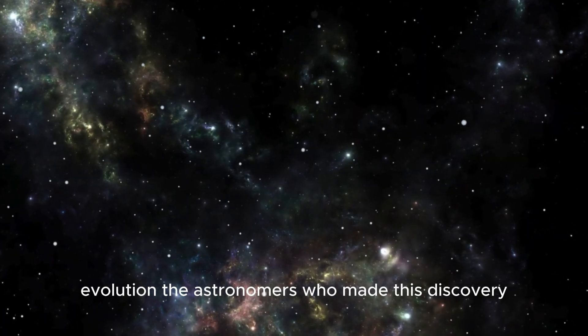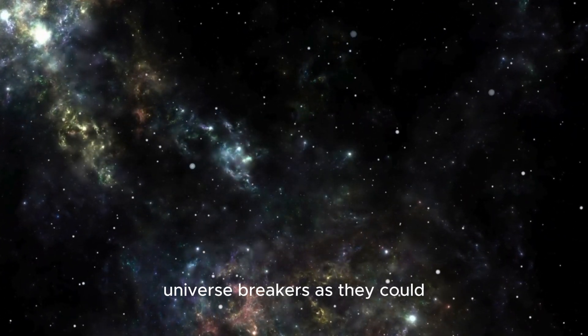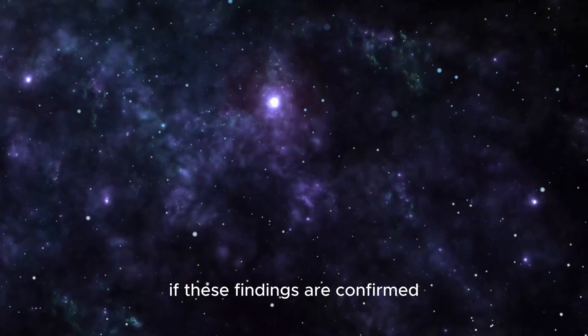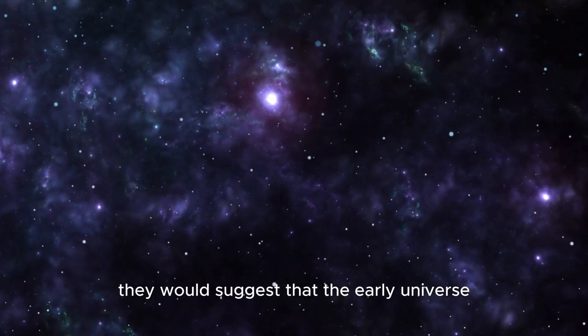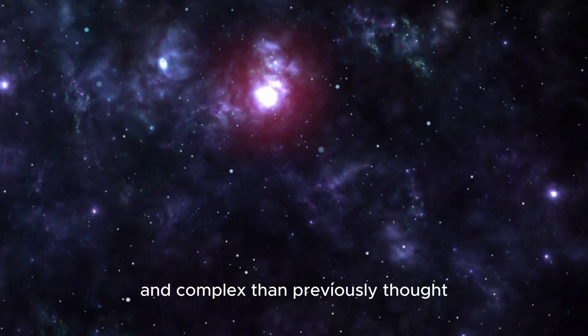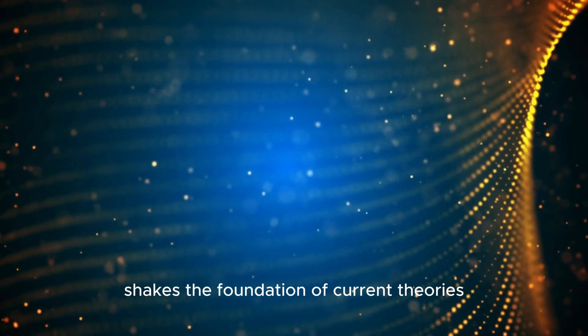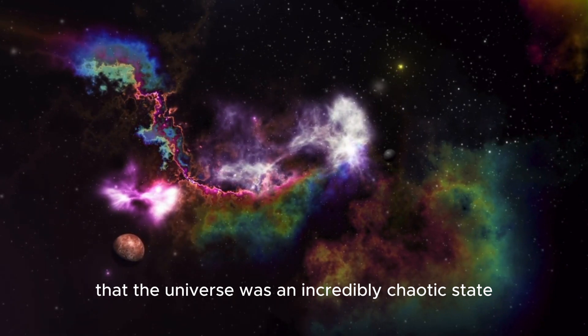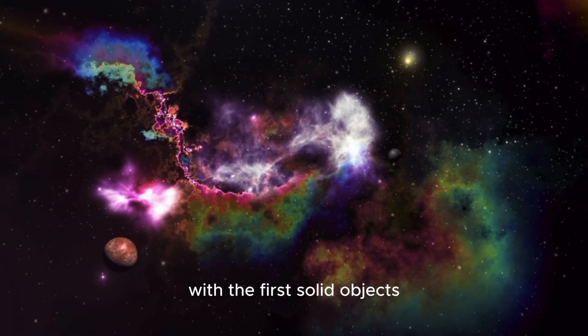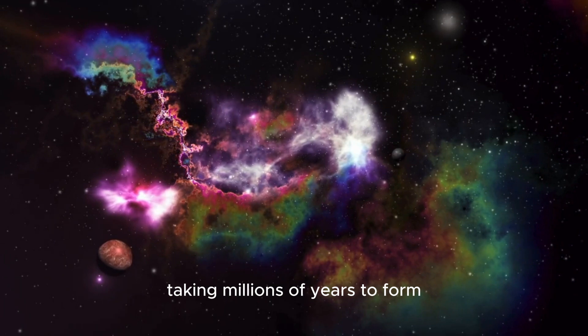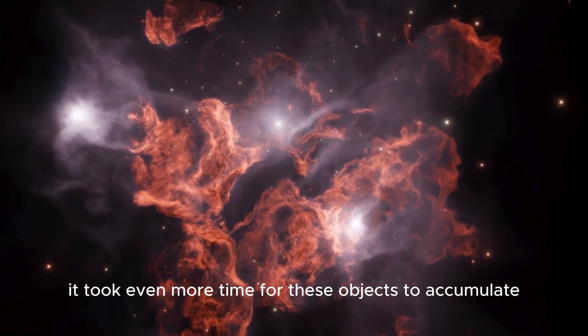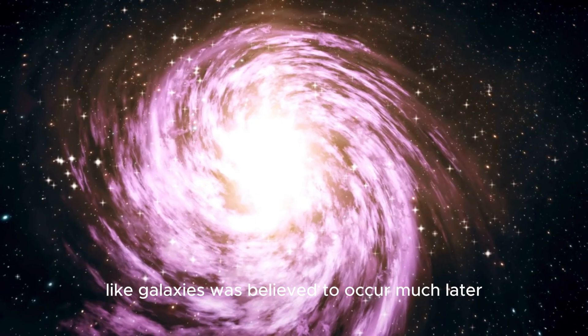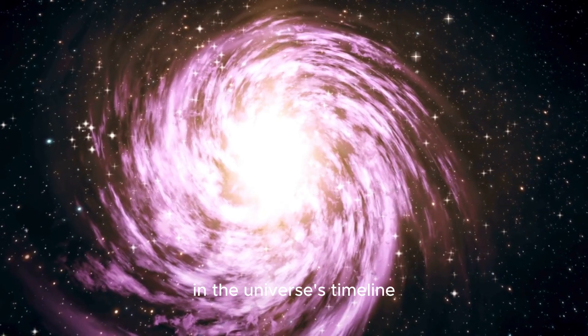The astronomers who made this discovery have named these extraordinary galaxies 'universe breakers,' as they could potentially transform our entire understanding of the cosmos. If these findings are confirmed, they would suggest that the early universe was far more unique and complex than previously thought. This revelation shakes the foundation of current theories. The Big Bang Theory holds that the universe was an incredibly chaotic state immediately after the initial event, with the first solid objects taking millions of years to form. The formation of complex structures like galaxies was believed to occur much later in the universe's timeline.